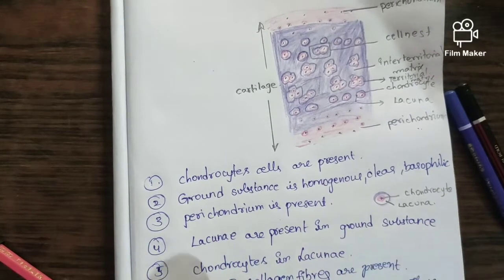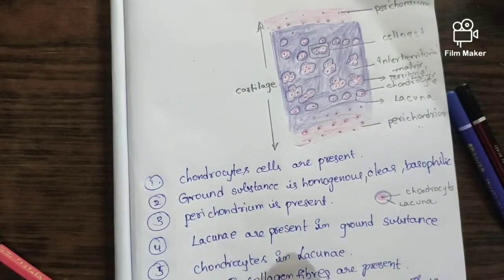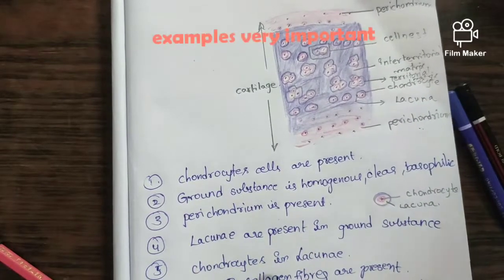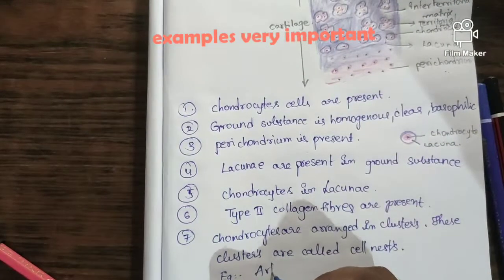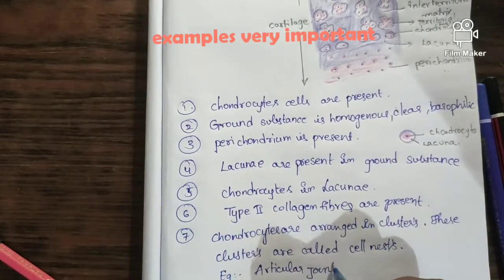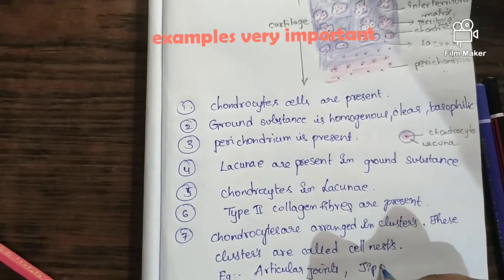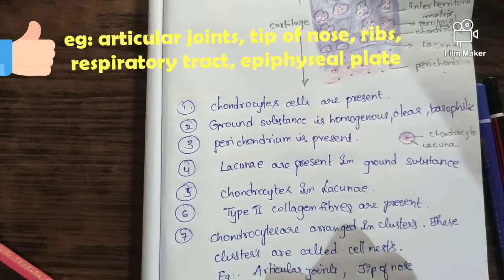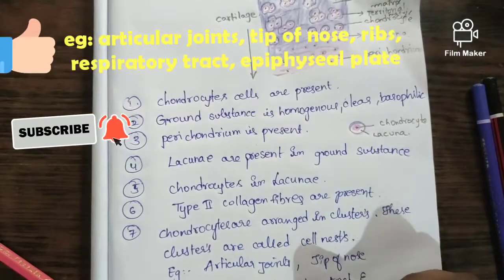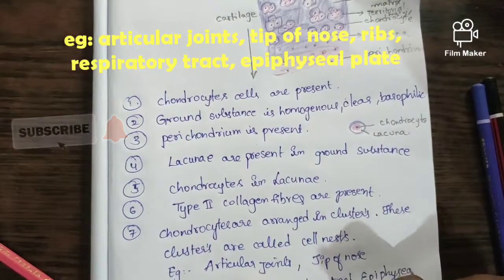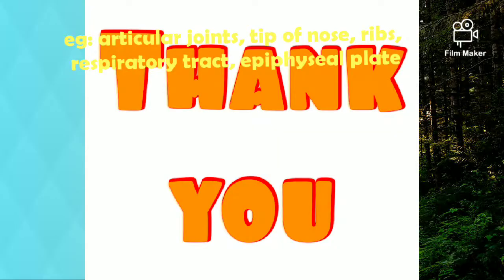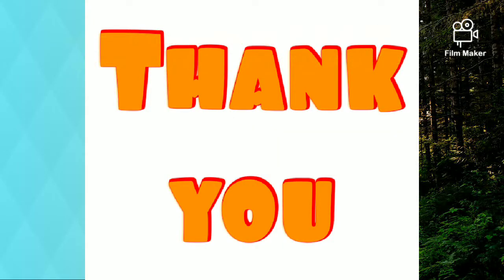Chondrocytes in lacunae — type 2 collagen fibers are present in hyaline cartilage. Chondrocytes are arranged in clusters, and these clusters are called cell nests. Examples are very important for any histology question; this is mainly given for four marks. Please do subscribe to my channel, like, and share.